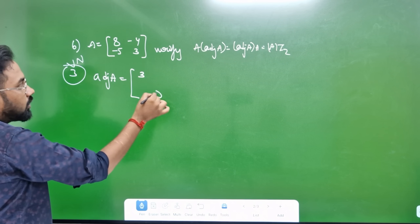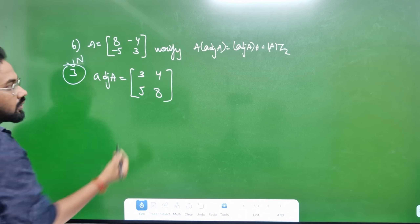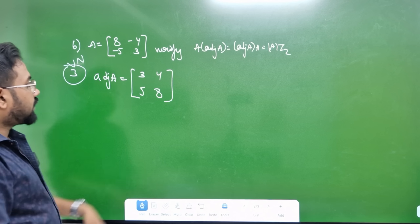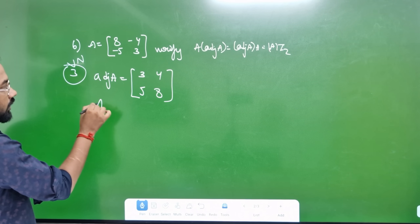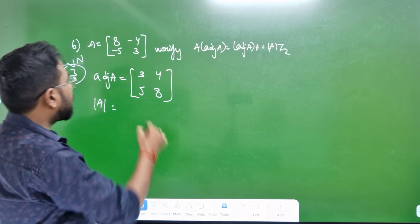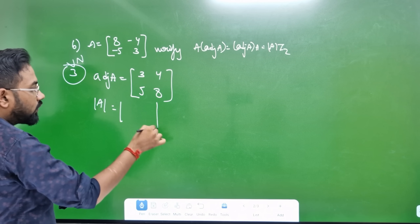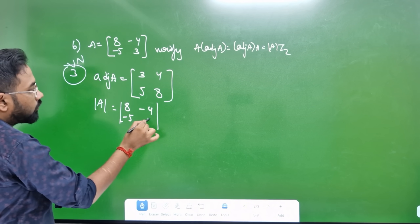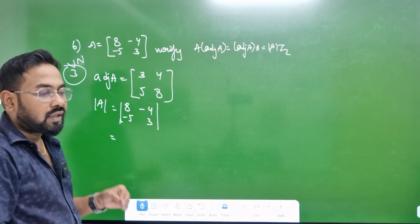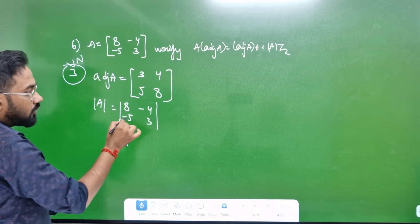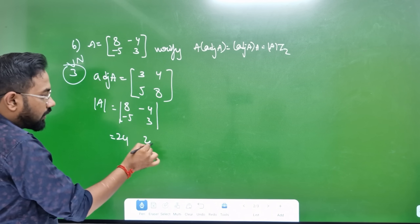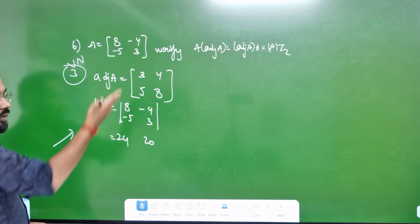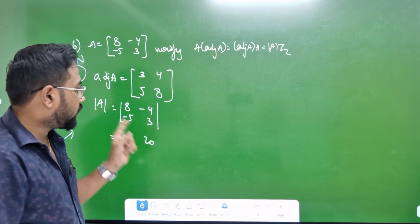Adjoint A is equal to 2x2 matrix: 3, 8. Let's change these two — sign changes. Simple. Now, the determinant is equal to 1. Determinant is equal to 1. Let's change this. Determinant is already 11. 8 times 3 is 24. 5 times 4 is 20. And minus into minus is plus. This is the same.